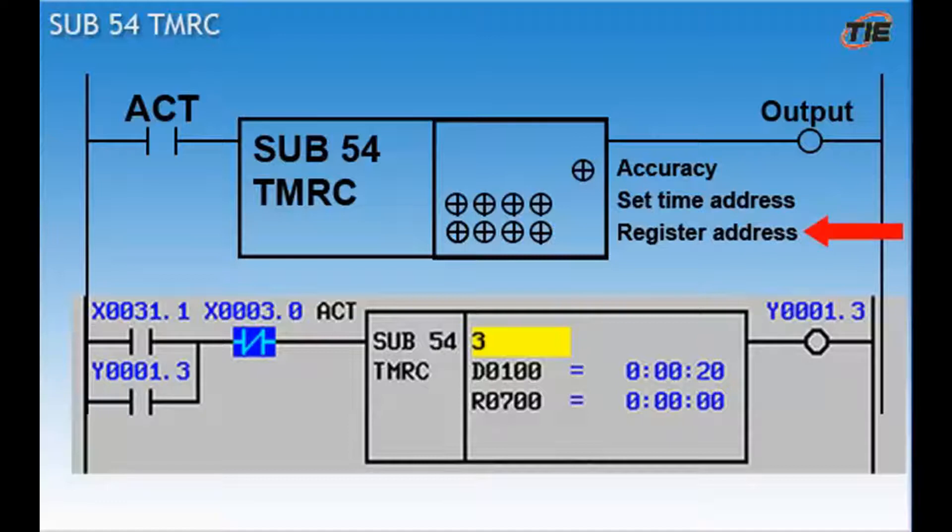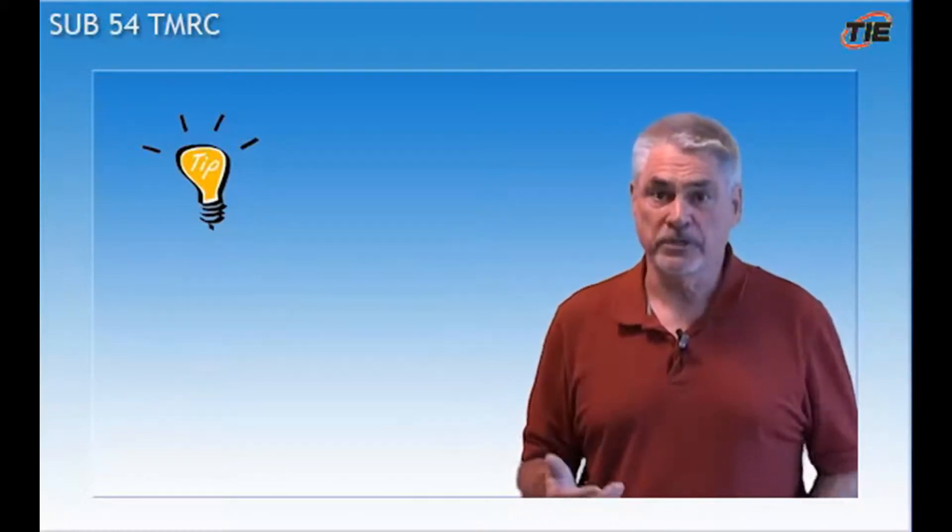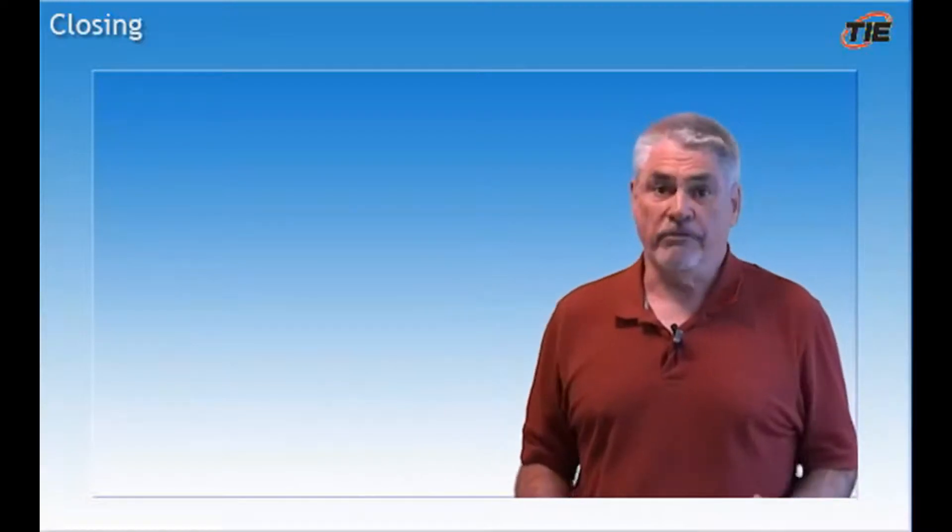Line 3 is the starting address where the actual counting will occur. This address will take up to 4 consecutive bytes of data. So a setting of R700 will use the addresses R700 through R703. These addresses must not be used in the ladder for any other purpose. Please note that, unlike the other timers we discussed, there are no timer numbers associated with the sub 54. This ends my description of the basic timers used on a FANUC control.